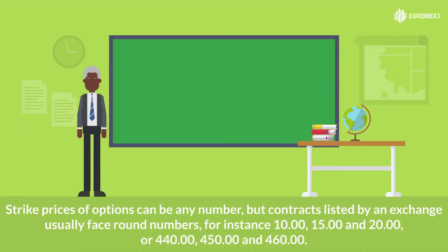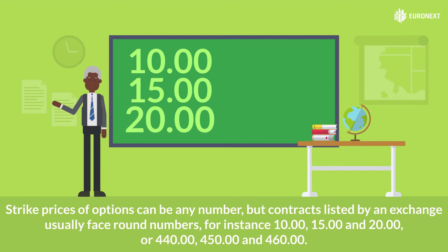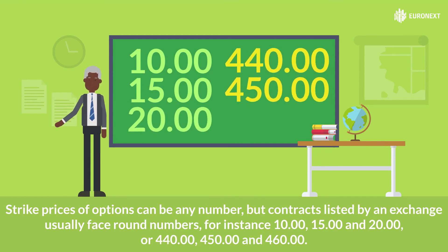Strike prices of options can be any number, but contracts listed by an exchange usually feature round numbers, for instance 10, 15, 20, or 440, 450, and 460.